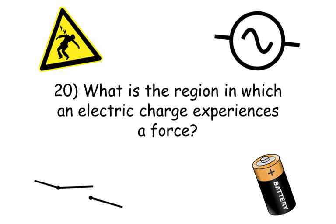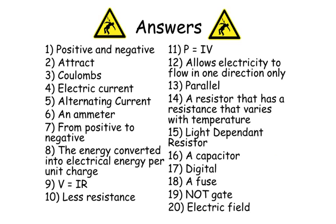Okay guys, here are your answers. Number one: positive and negative. Two: attract. Three: coulombs. Four: electric current. Five: alternating current. Six: an ammeter. Seven: from positive to negative. Eight: the energy converted into electrical energy per unit charge. Number nine: V equals IR. Number ten: less resistance.